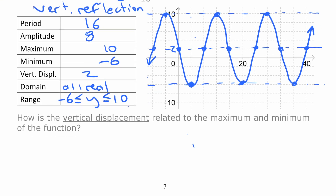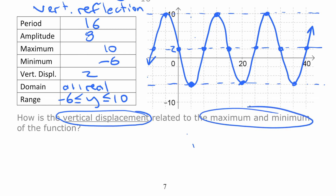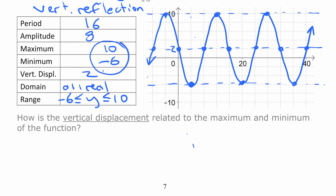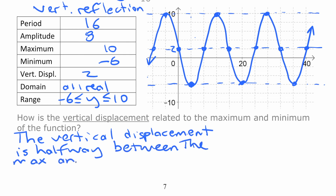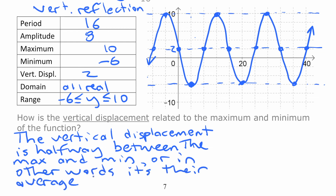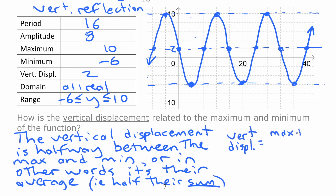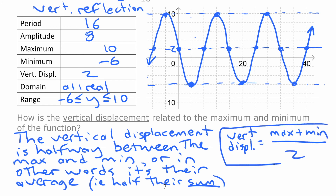One last thing: how is vertical displacement related to the maximum and minimum? If you know the max and the min, the vertical displacement is halfway between them — in other words, it's their average, or half their sum. The formula is: vertical displacement equals max plus min divided by 2. If you happen to know the max and the min, you can find the vertical displacement without even seeing the graph.